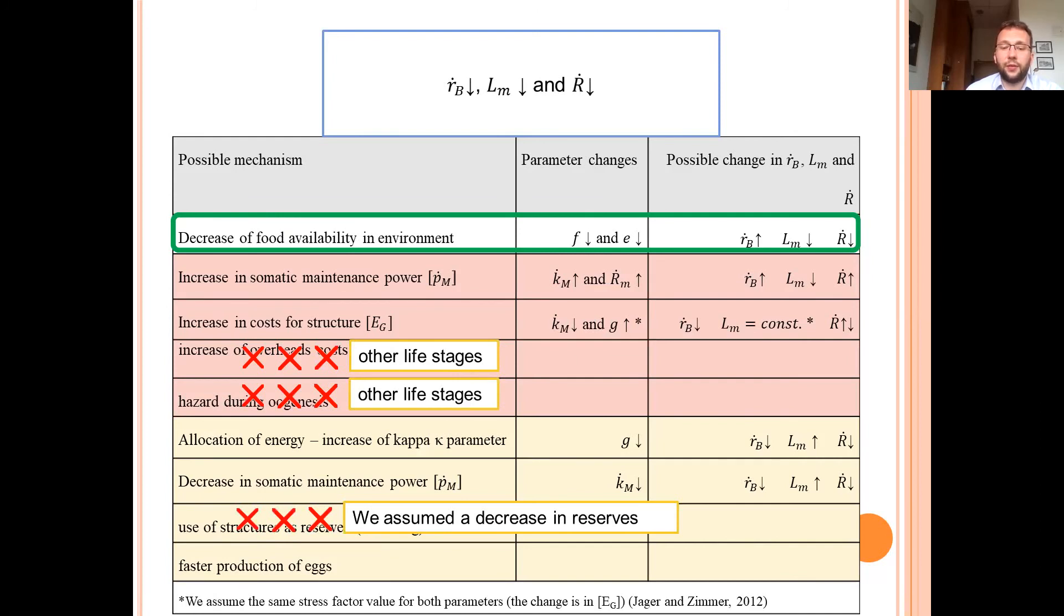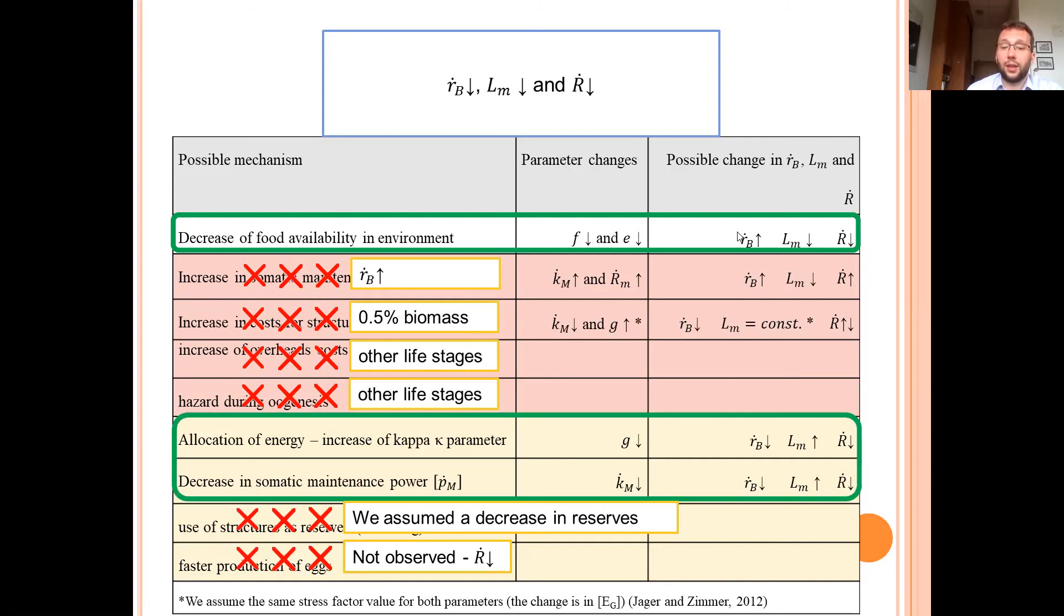We do not observe any faster egg production or faster pupation. We assume that structure composition is not affected. Only 0.5% of PS carbon can be found in the body tissues. And we can eliminate the increase in somatic maintenance, because it would additionally increase Rb value over here. So most probable is that Tenebrio molitor larvae change metabolism as a reaction to the insufficient food supply.